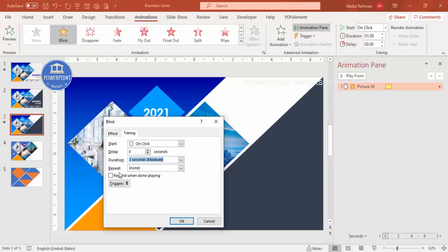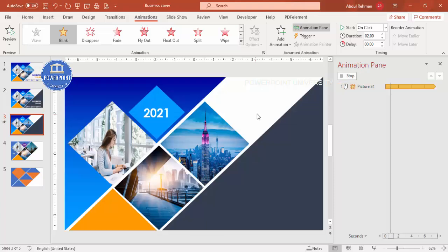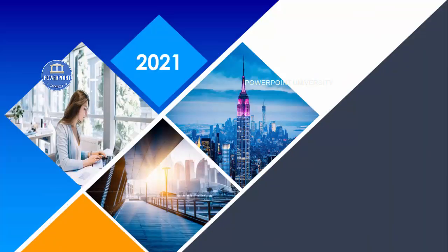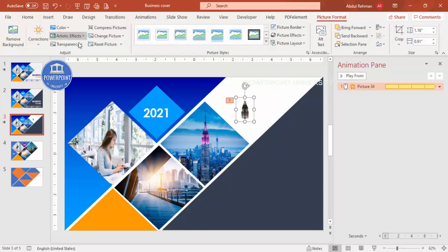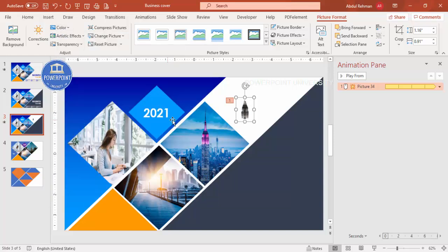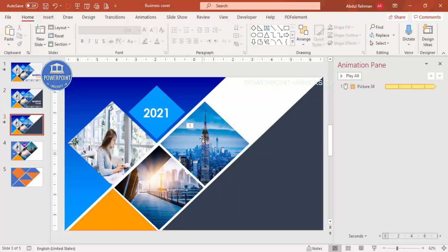Set the timing to Medium or Fast, set Repeat to Until End of Slide, and click OK. When you play the slide, you can see the blinking light effect. You can adjust the color if it's too dark — go back and change it to something better, then paste it back in place.